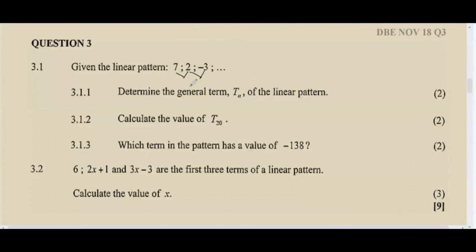The first thing we do is find the common difference between the terms. We take the second term and subtract the first term, then take the third term and subtract the second term. So 2 minus 7 is negative 5, and negative 3 minus 2 is also negative 5. This confirms we have a common difference of negative 5.